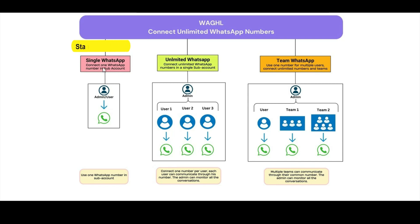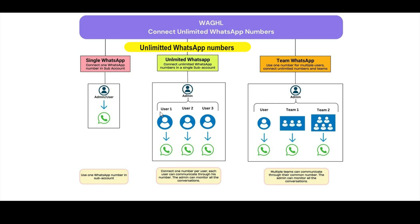In a standard scenario, you are using one WhatsApp number in a single sub-account as of now. But now we have launched an advanced feature where you can connect unlimited WhatsApp numbers in a single location. For example, you may create a number of users like user1, user2, user3, and each user can connect their own WhatsApp number and send and receive messages using their own separate number.